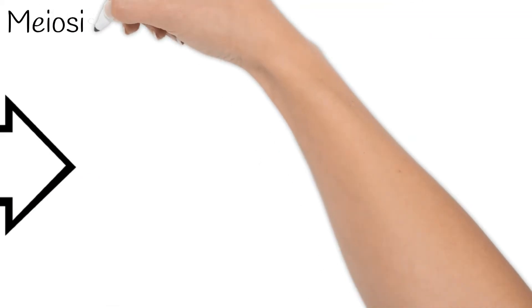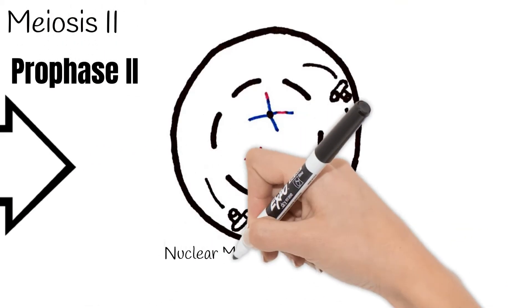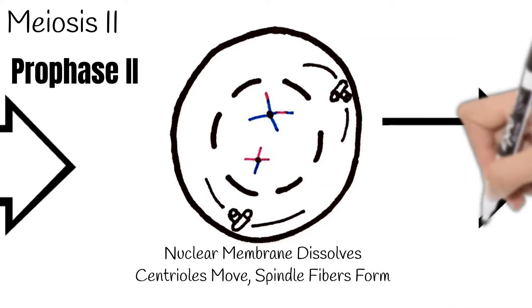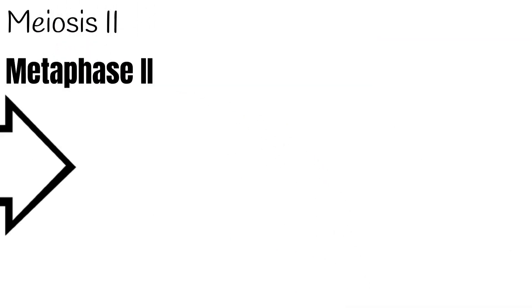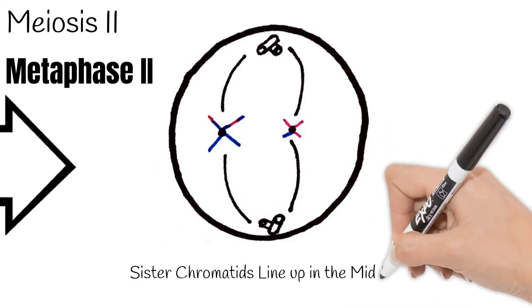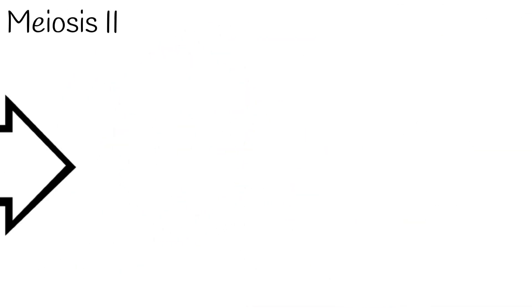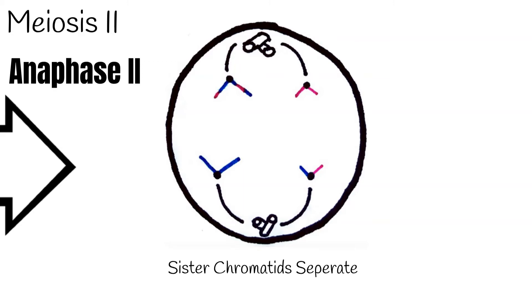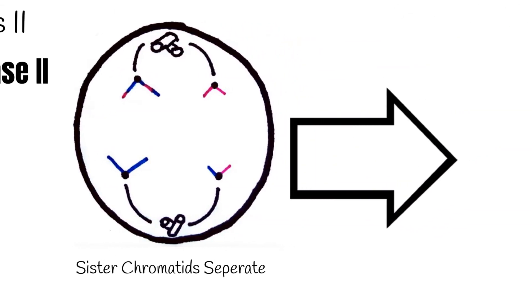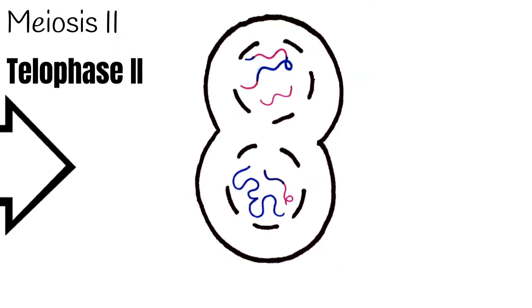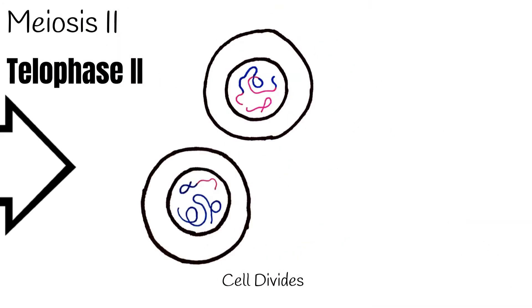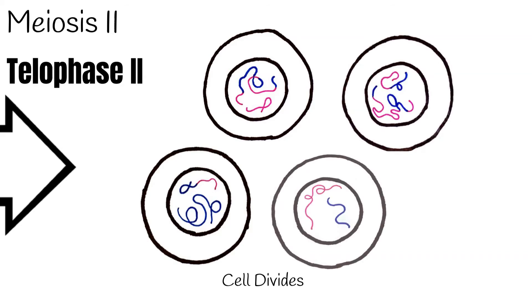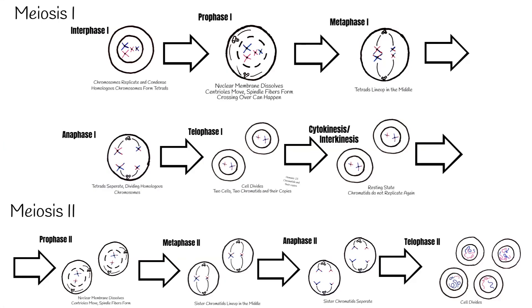Meiosis 2 starts with prophase 2, and the spindle fibers form and centrioles move to each end. In metaphase 2, the sister chromatids line up at the middle of the cell. During anaphase 2, the sister chromatids separate, and each chromatid moves to opposite sides of the cell. Lastly, during telophase 2, the cell divides. Remember, both cells from meiosis 1 are doing this. So now we have four new haploid cells, containing one chromatid each from the original tetrad.